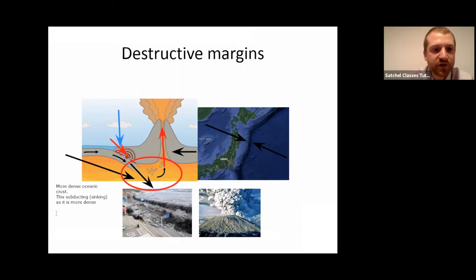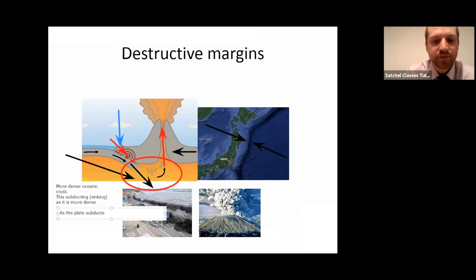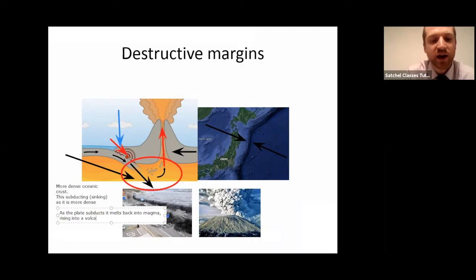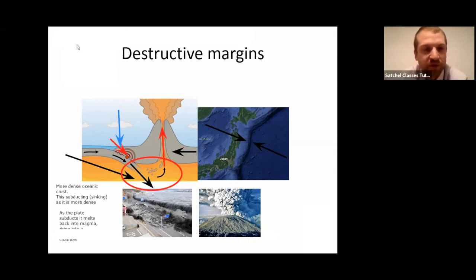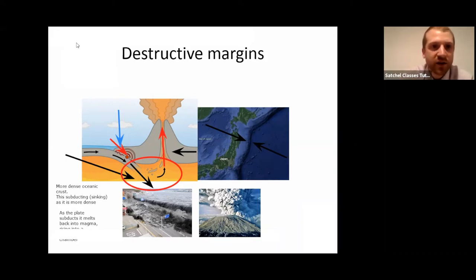As the plate subducts, it melts back into magma, rising into a volcano's magma chamber. So we know that we're going to have volcanoes there because magma is being created — these tend to be more explosive composite volcanoes. We will probably also notice that there's going to be earthquakes, because of the tremors as these huge chunks of rock grind past each other, building up a huge amount of tension.